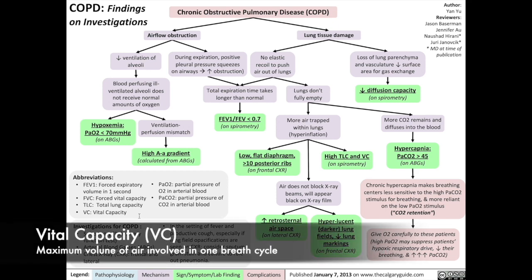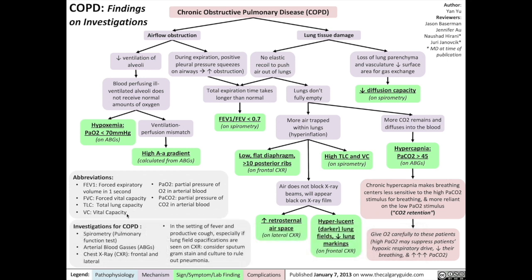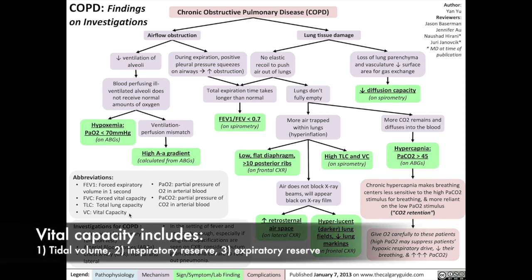The other subdivision is called the vital capacity, VC, which is the maximum volume of air involved in one breathing cycle of maximum inspiration and maximum expiration. Vital capacity includes three volumes: the tidal volume, the inspiratory reserve, and the expiratory reserve.